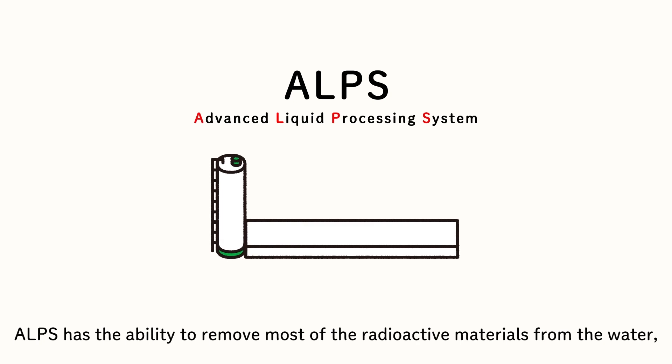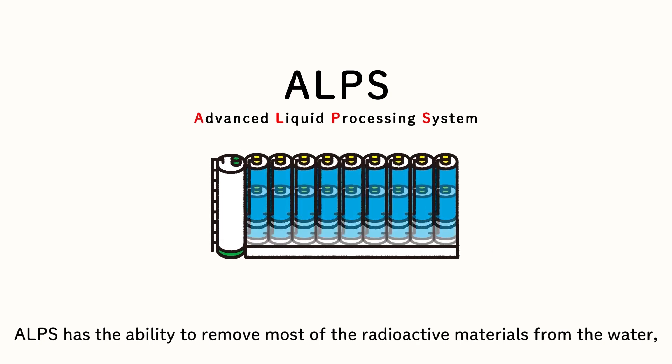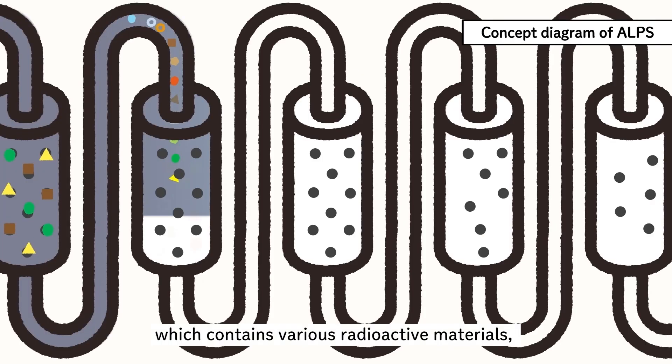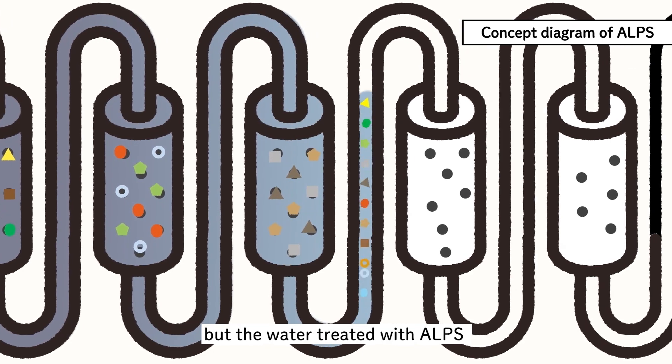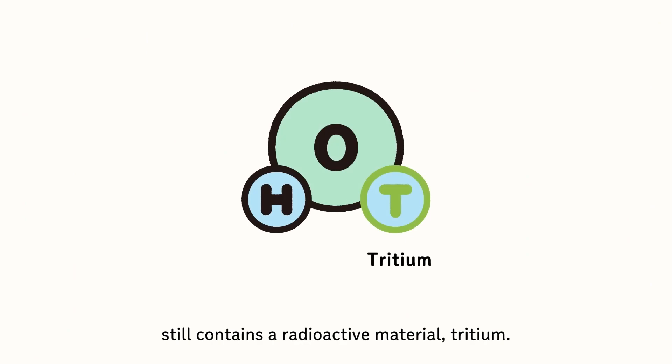ALPS has the ability to remove most of the radioactive materials from the water, which contains various radioactive materials. But the water treated with ALPS still contains a radioactive material, tritium.